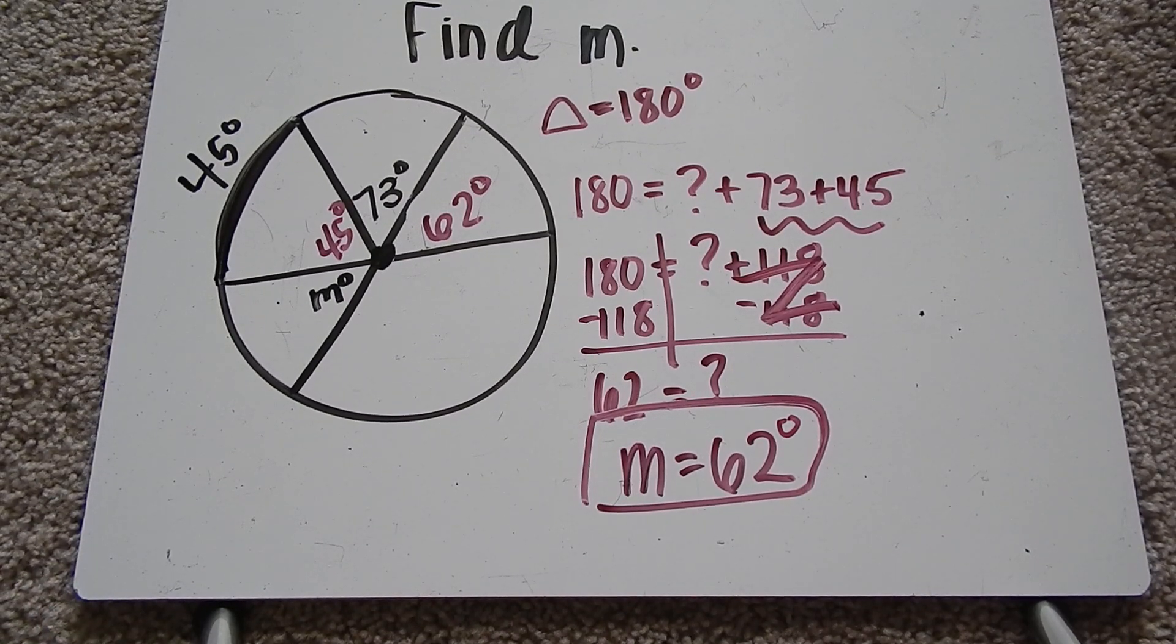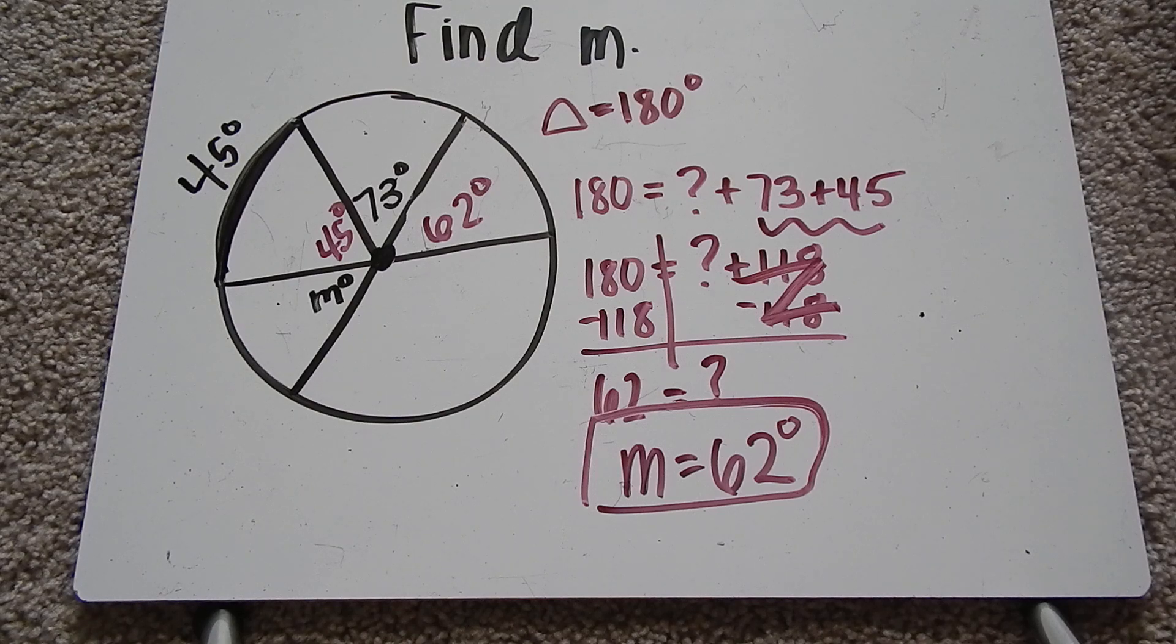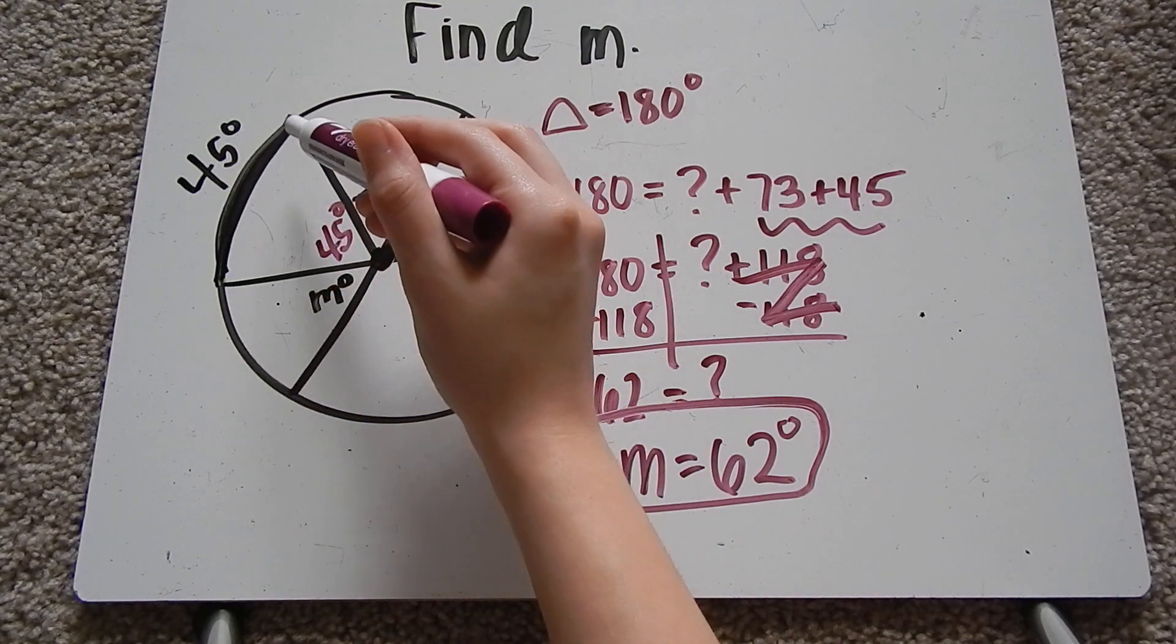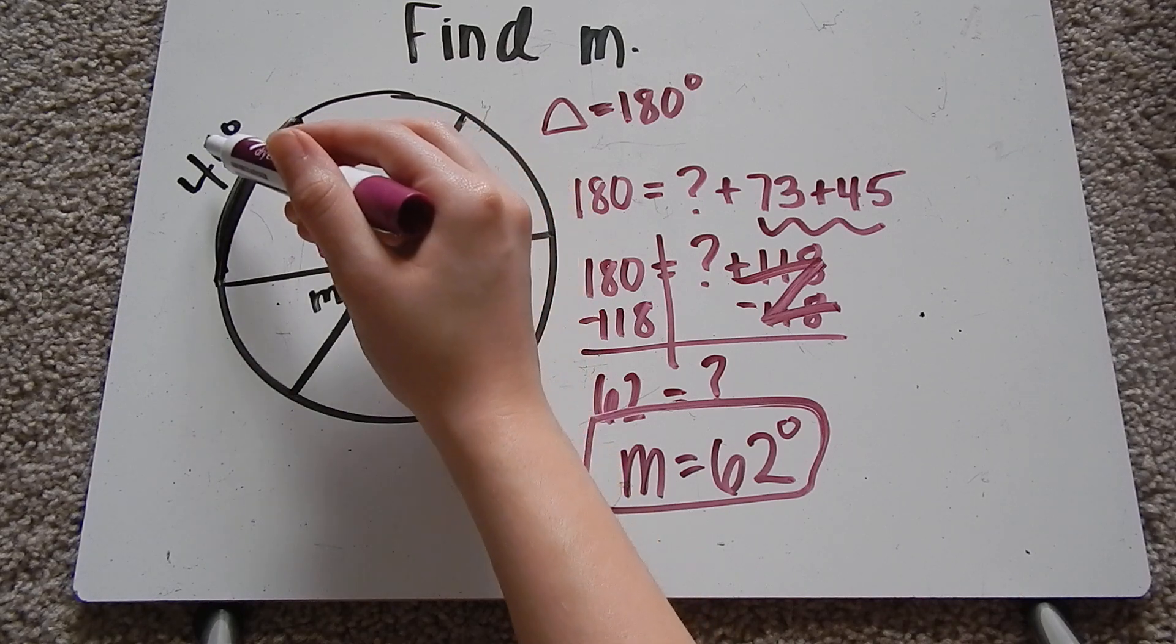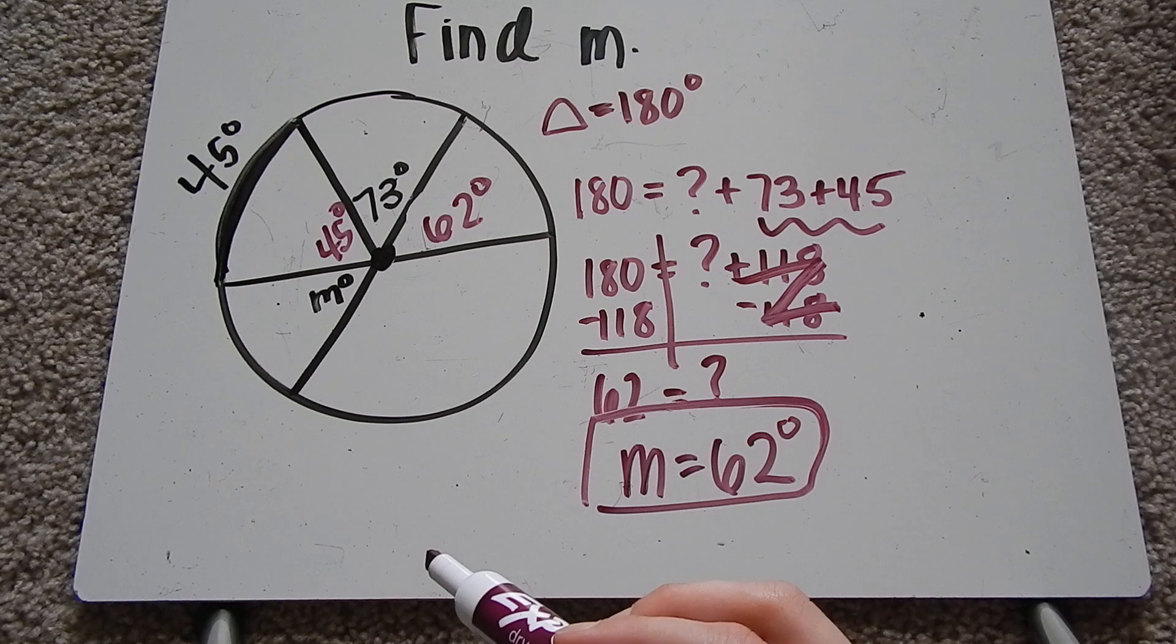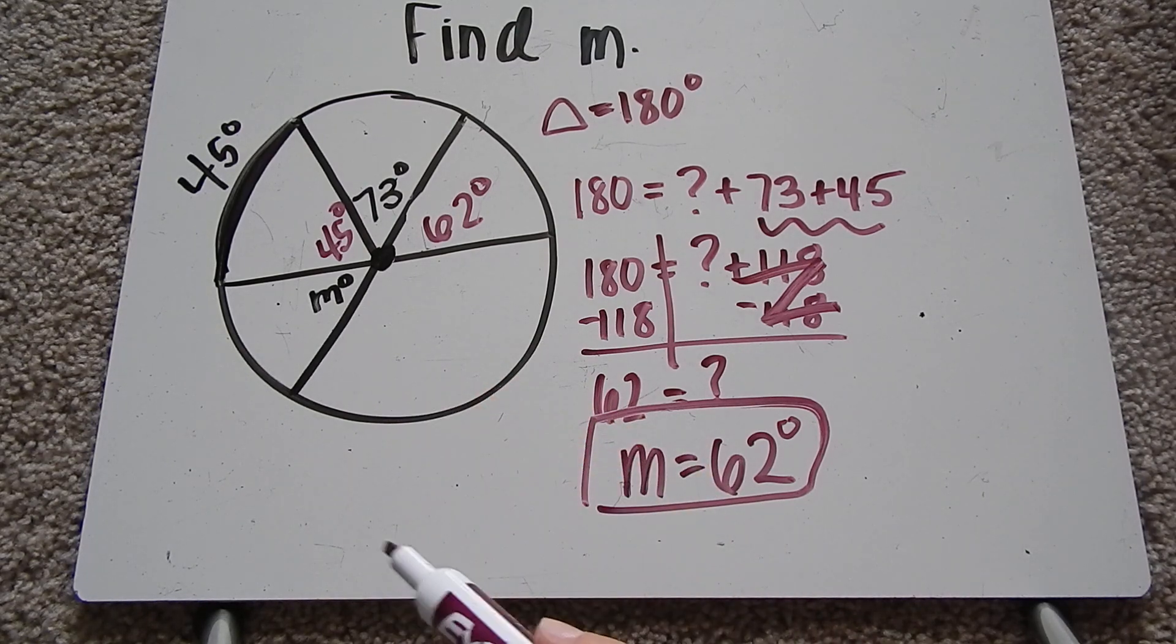So we had to know something very important to finish that problem, which is what we just learned. Since this arc length is 45 degrees, I know that this angle measure is 45 degrees. That's how we started this problem and came to our final answer for m.